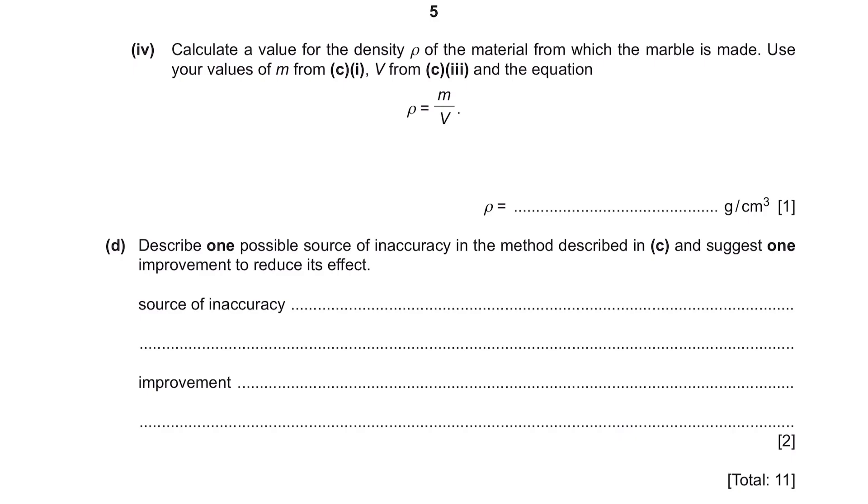Part 4. Calculate a value for the density of the material from which the marble is made. Use your values of M from C part 1, V from C part 3, and the equation. Let's just substitute our values in. The mass from C part 1 was 6.7 grams and the V from C part 3 was 2.4 centimeter cubes, giving us this value. Make sure you write this in two significant figures, that being 2.8.